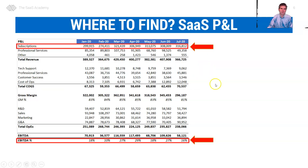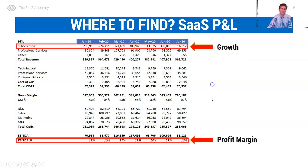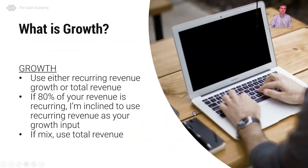Where do we find our inputs to measure the Rule of 40? We look to our SaaS P&L. For growth, we'll take either subscription revenue or total revenue, and for profit margin we'll look to our EBITDA margin.